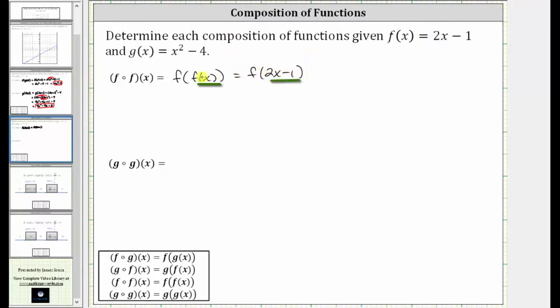Again, we replace the inner function f of x with the function rule 2x minus 1, and then this becomes the input into our function f of x. And since f of x is equal to 2x minus 1, we substitute 2x minus 1 for x, which gives us 2 times the quantity 2x minus 1 minus 1. And now we simplify.